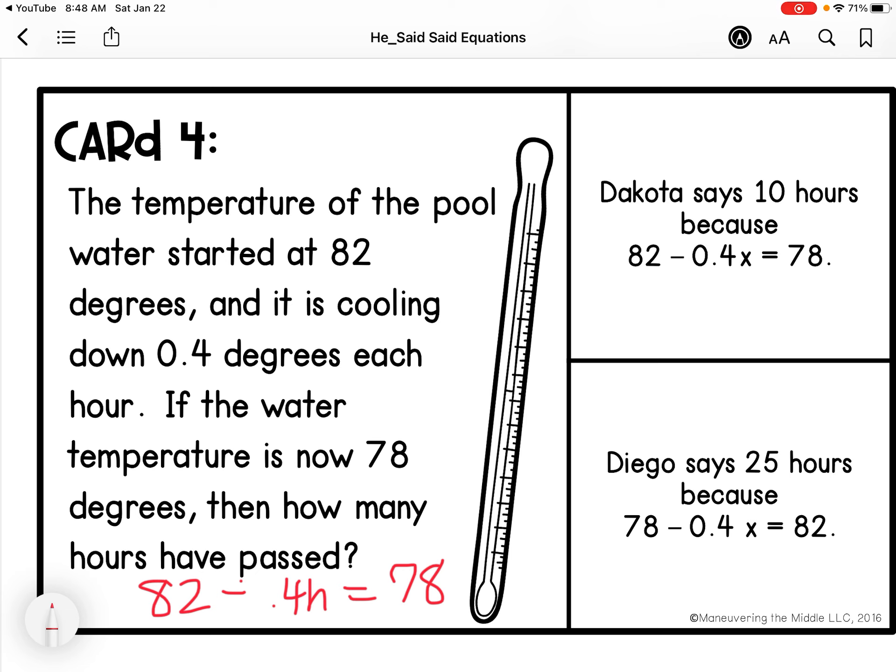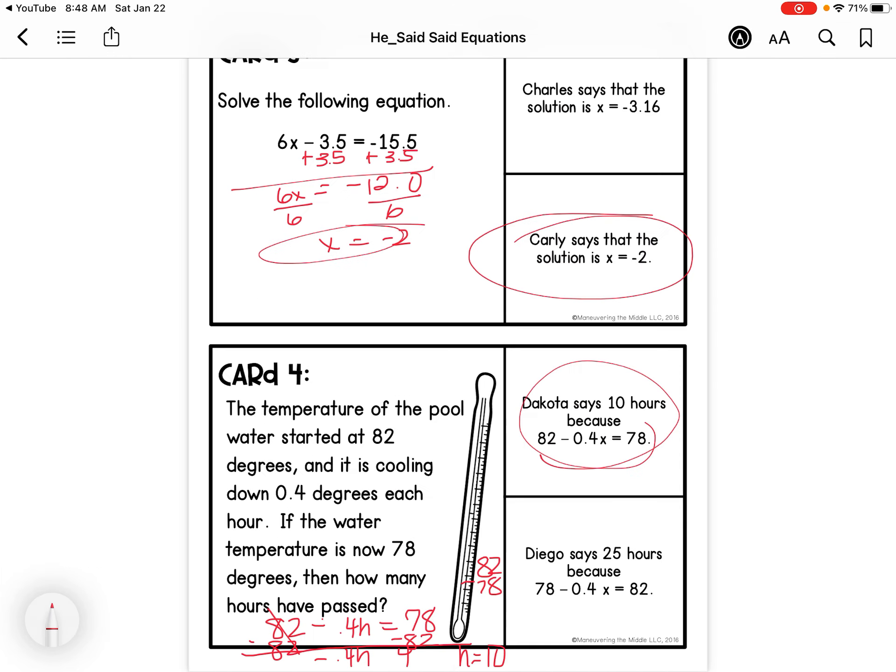So we're going to subtract 82 on each side. So we get minus 0.4 H. And then our signs are different, so we actually have to subtract. And even though it's upside down, you're going to flip it over. So 82 minus 78, and we get 4. We're going to divide by 0.4 on each side. So we get 10. So H equals 10 hours. So Dakota is right.